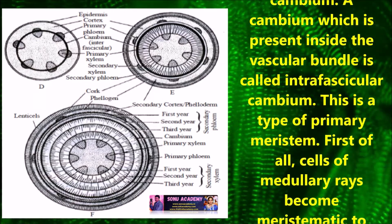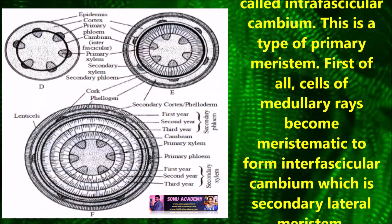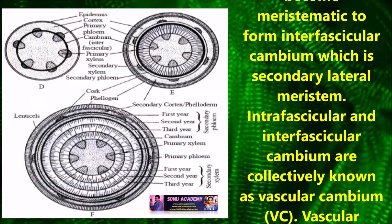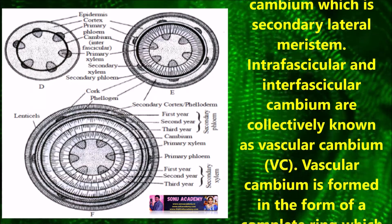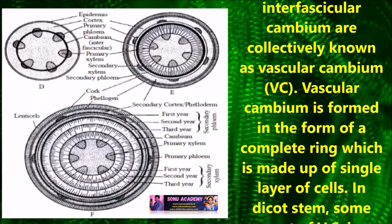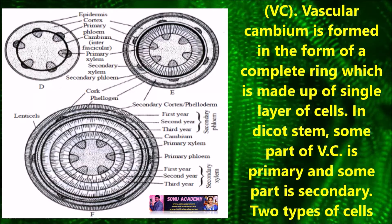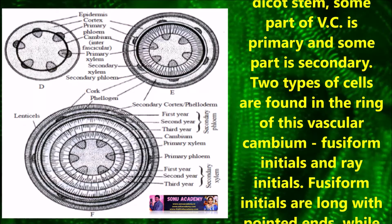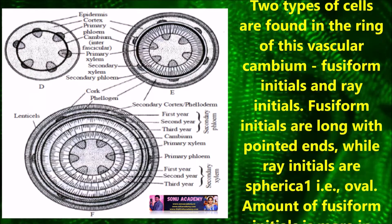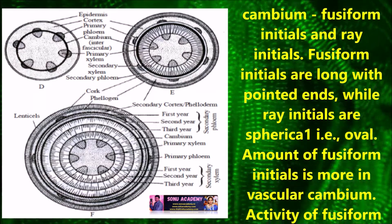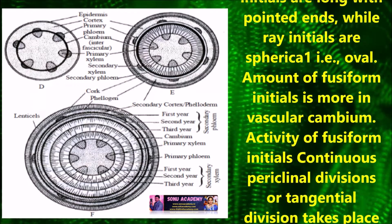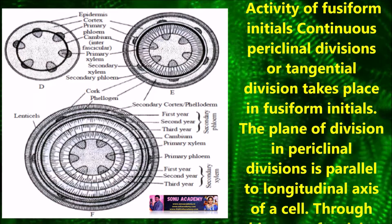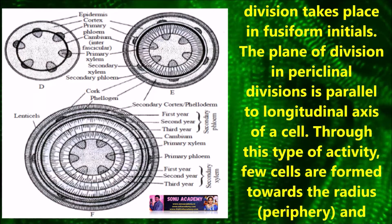A cambium which is present inside the vascular bundle is called intravascular cambium. This is a type of primary meristem. First of all, cells of medullary rays become meristematic to form interfascicular cambium, which is a secondary lateral meristem. The intravascular and interfascicular cambium are collectively known as vascular cambium.